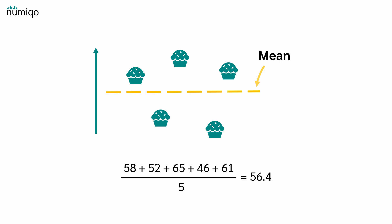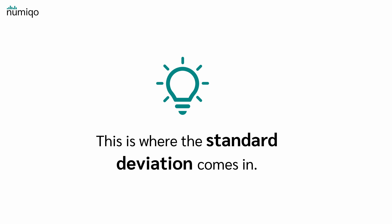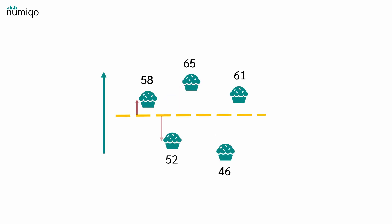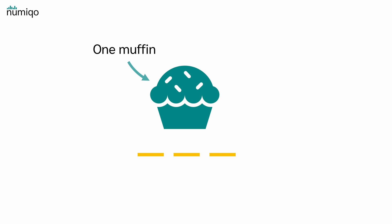We just add up all the weights and divide by the number of muffins, so in our case 5, and we get a mean of 56.4. But now a super annoying customer comes into your bakery and asks, how much do these muffins vary around the mean? This is where the standard deviation comes in. Each muffin from your sample has a certain deviation from the mean — some weigh a bit more, some weigh a bit less. The standard deviation tells us, if we grab one muffin, how far off from the average weight will this muffin usually be?